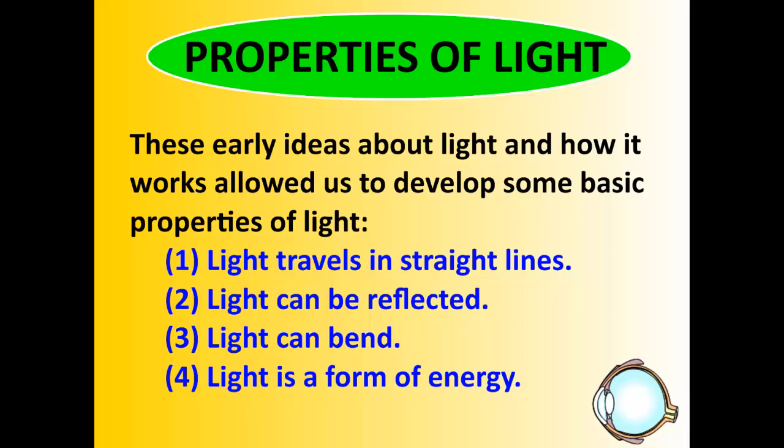All this history and knowledge about light brings us to the properties of light. These early ideas from Archimedes, Pythagoras, and Newton came together to form four principles. First, light travels in straight lines. Second, light can be reflected. Third, light can bend — and we'll talk a lot about that in this unit. And fourth, light is a form of energy. Everything we talk about in this whole unit comes back to these four different properties. We're going to focus on the first of the four next, then cover two, three, and four as we go on.